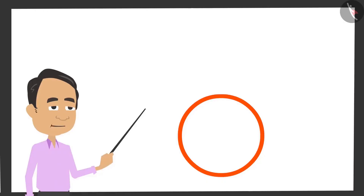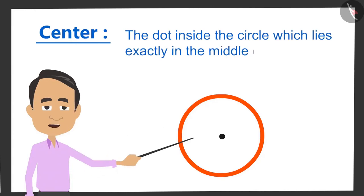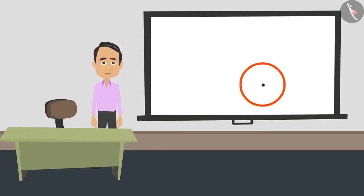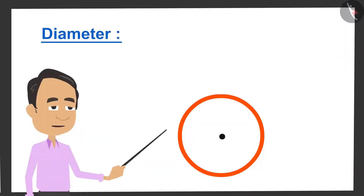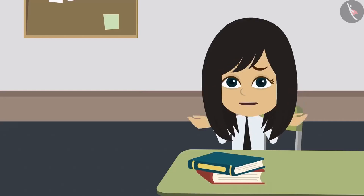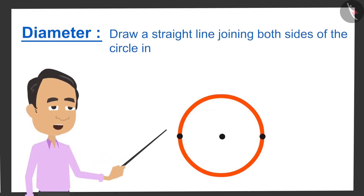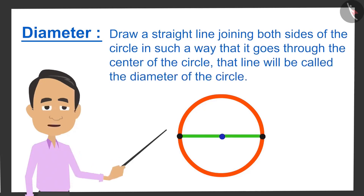Now we know the definition of a circle, but we have not learnt how to measure it. As soon as I tell you the properties of a circle, you will learn about measuring it. The first property of a circle is the centre. The dot inside the circle which lies exactly in the middle of the circle is called the centre of the circle. And all circles have only one centre.